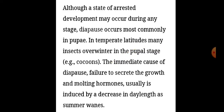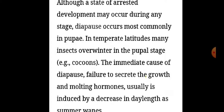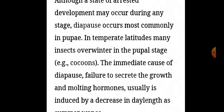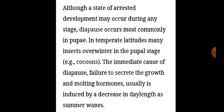Although a state of arrested development may occur during any stage, diapause occurs most commonly in pupae. In temperate latitudes, many insects overwinter in the pupal stage, e.g. cocoons. The immediate cause of diapause — failure to secrete the growth and molting hormones — is usually induced by a decrease in day length as summer wanes.